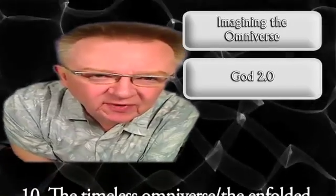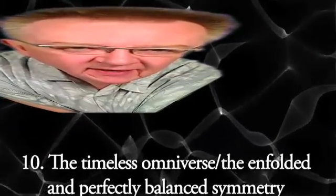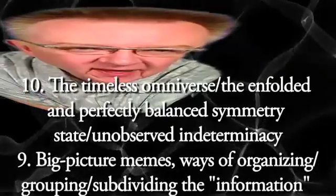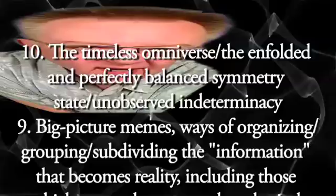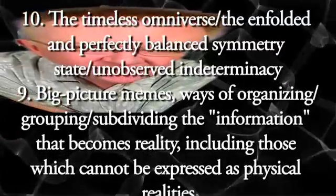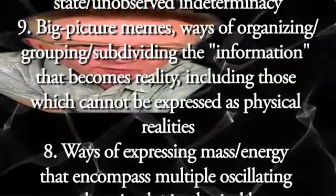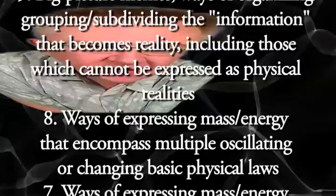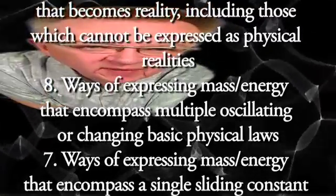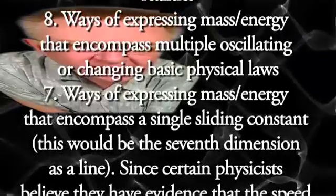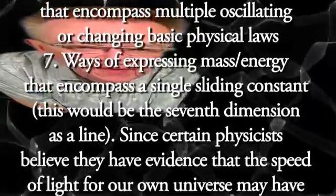So let's go back to that list again, working through the hierarchy of dimensions as I've portrayed them, but this time moving from the top down. Ten would be the timeless omniverse — the enfolded and perfectly balanced symmetry state, unobserved indeterminacy. Nine would be big picture memes, ways of organizing, grouping, subdividing the information that becomes reality, including those which cannot be expressed as physical realities. Eight would be ways of expressing mass and energy that encompass multiple, oscillating, or changing basic physical laws. Seven would be ways of expressing mass and energy that encompass a single sliding constant, and this would be the seventh dimension as a line.